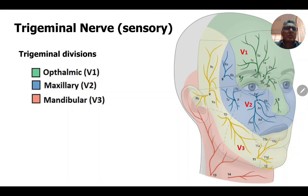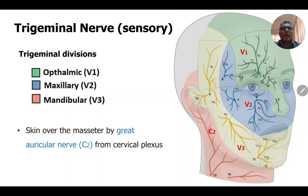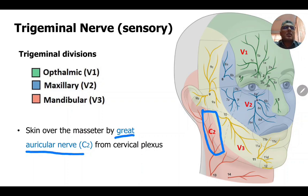If you touch the cornea or sclera, the sensory inputs go into the brain through the ophthalmic division of the trigeminal nerve. Another important point is that the skin over the masseter muscle is not supplied by the three divisions of the trigeminal nerve, but by the great auricular nerve, which is a branch from the cervical plexus given from the C2 spinal segment. Therefore, the dermatome over the masseter muscle is C2, not the three divisions of the trigeminal nerve.